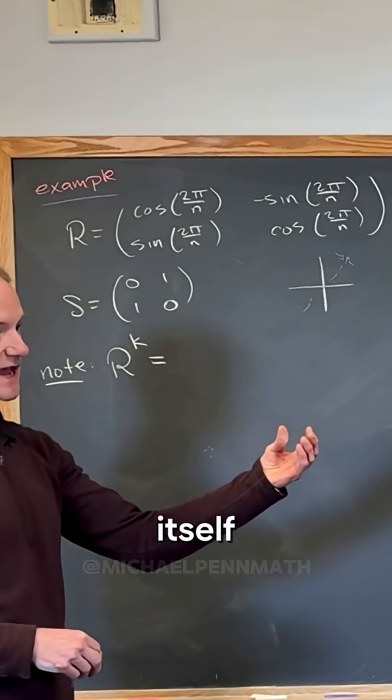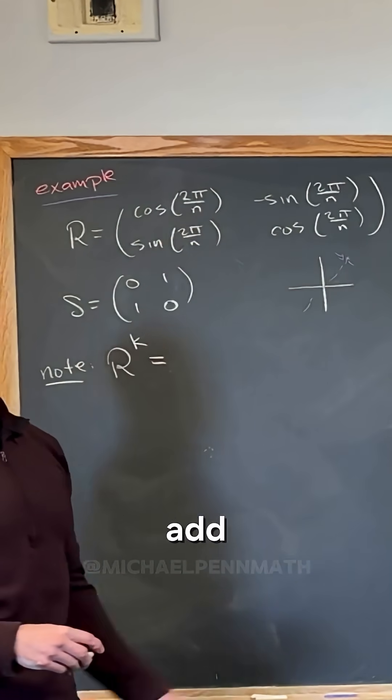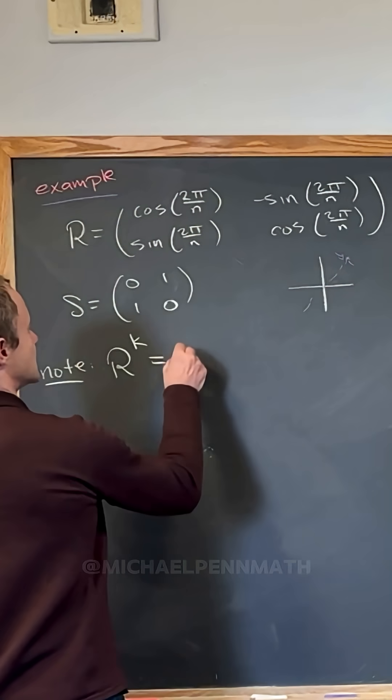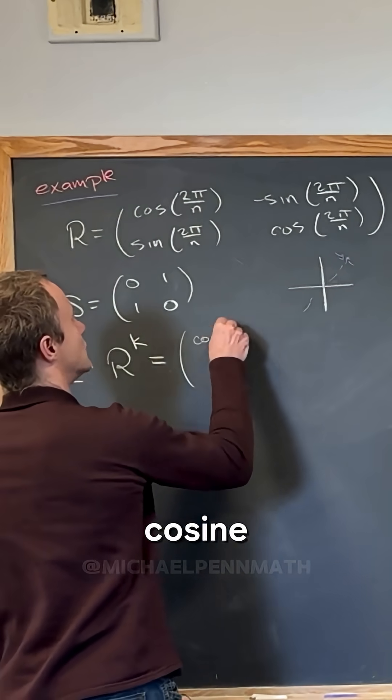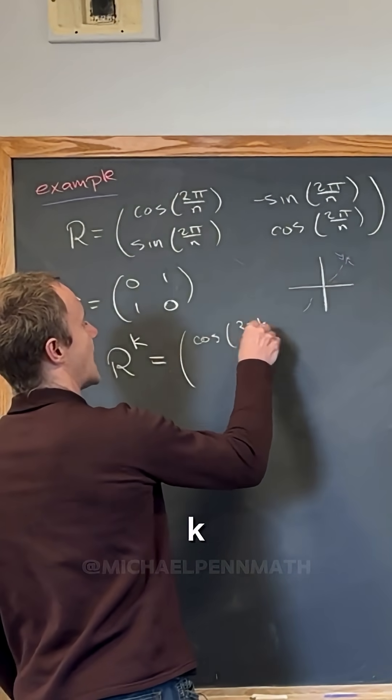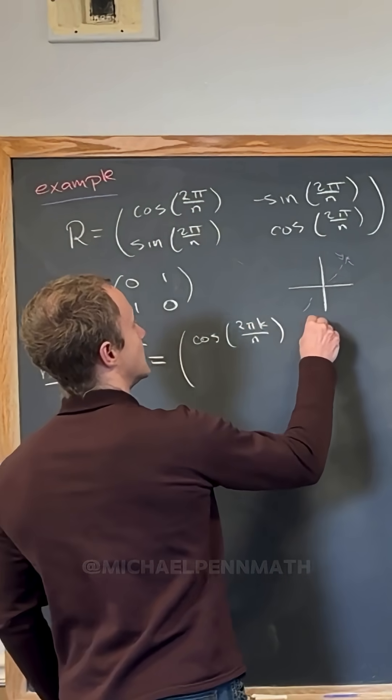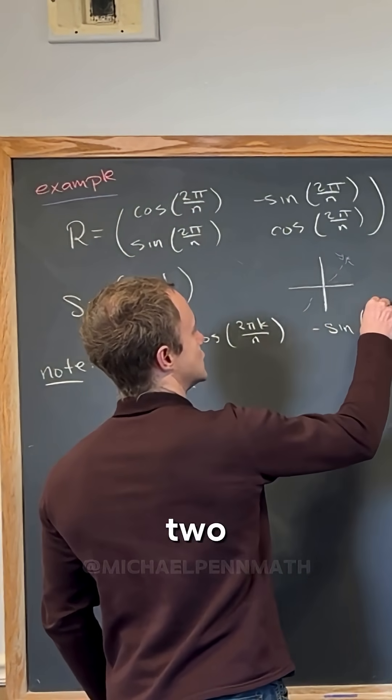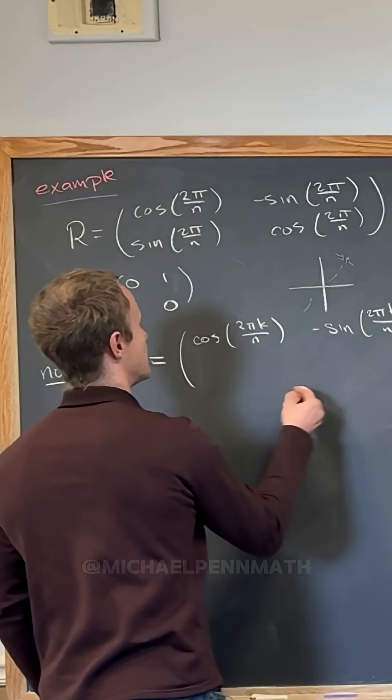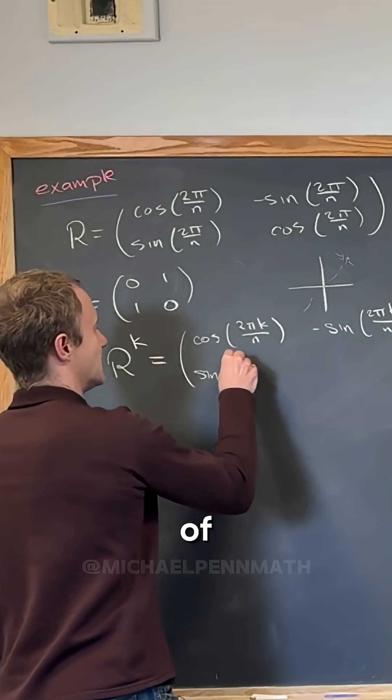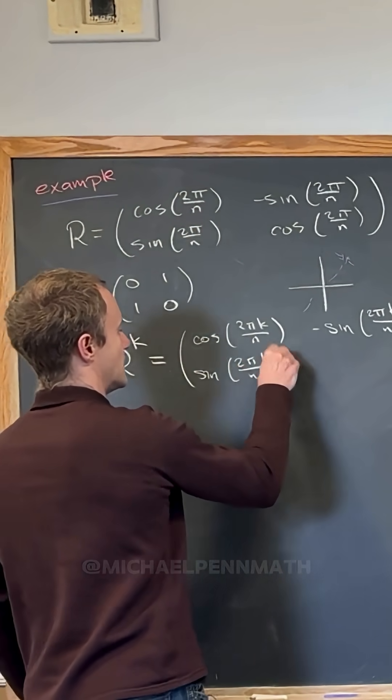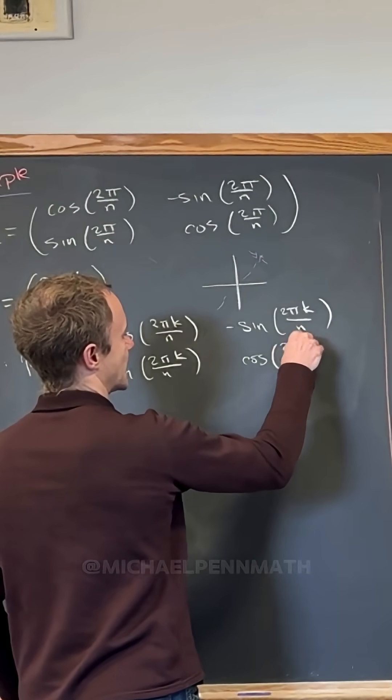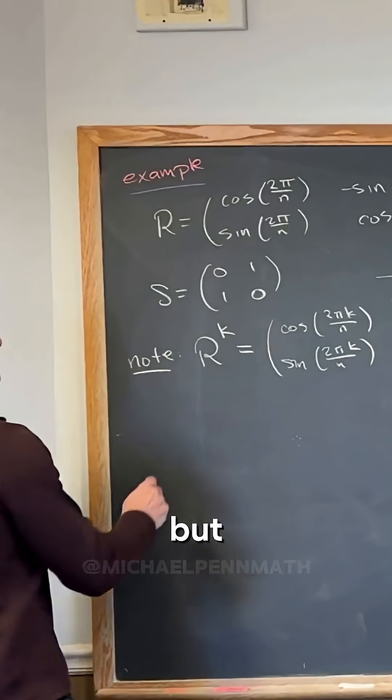So that's going to give us the cosine of 2πk over n, the negative sine of 2πk over n, the sine of 2πk over n, and then the cosine of 2πk over n.